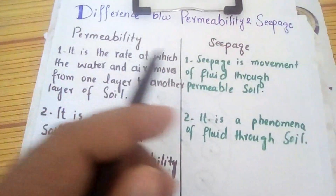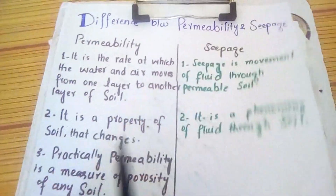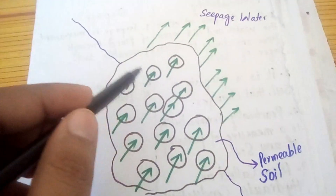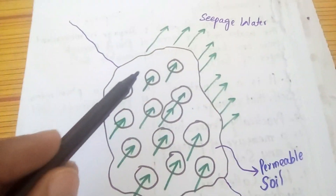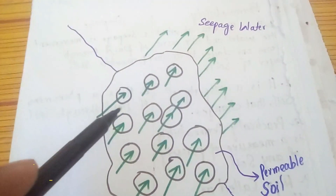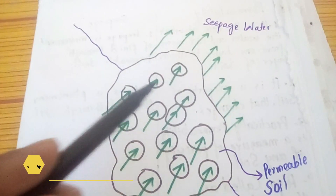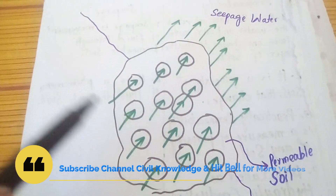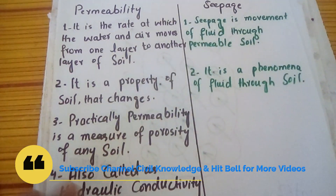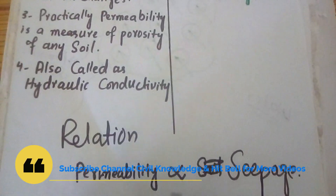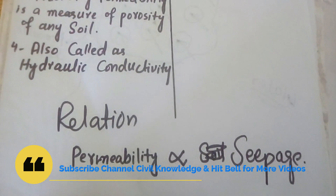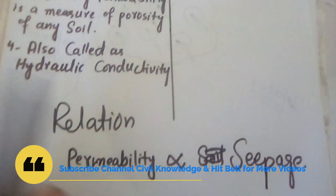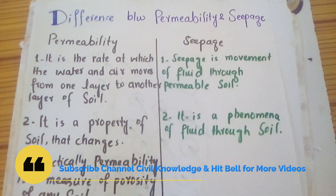Regarding the relationship between permeability and seepage: when there are more pores in a soil, the permeability of that soil will be more, and more water will flow through it — hence the seepage of that soil will also be more. Therefore, permeability is directly proportional to seepage. If any soil has higher permeability, the seepage through that soil will also be greater.